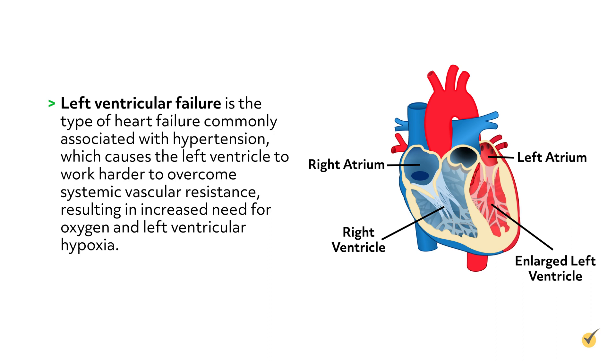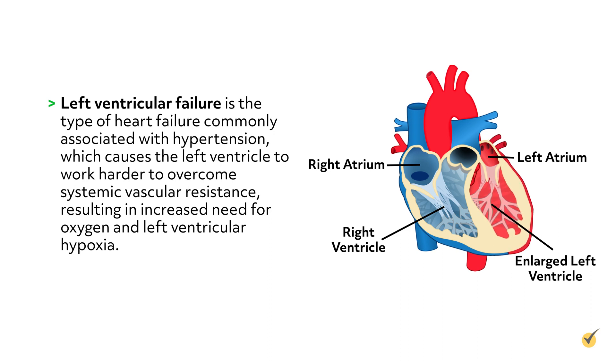The left ventricle begins to dilate. Hypertrophy develops and pulmonary pressure increases as blood backs up into the left atrium and pulmonary veins.